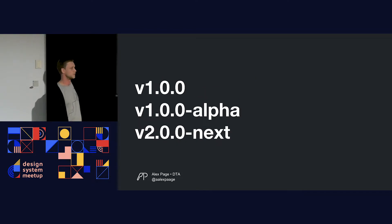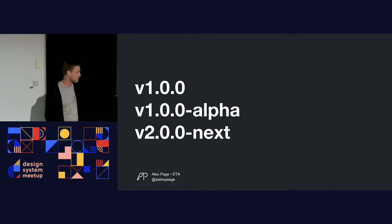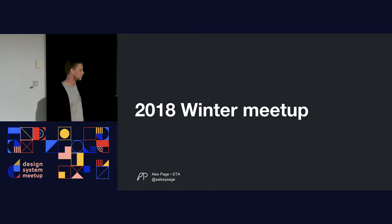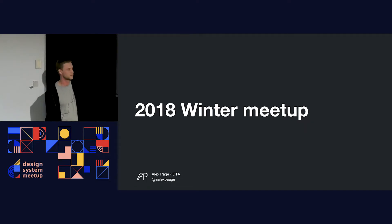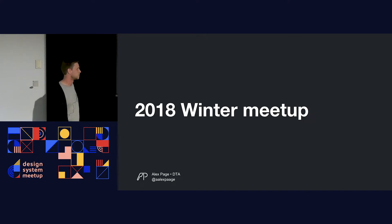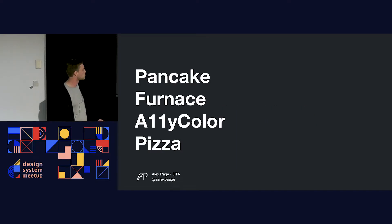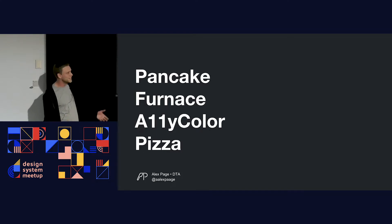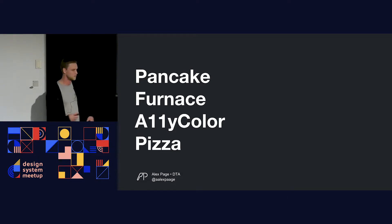We also do releases. When we release new components, we give them versions. We may use semantic versioning, add a tag, or deploy the next version of a component. Design systems also have events like community meetups — we recently hosted our 2018 winter meetup for the Australian Government Design System. And finally, the tools that go into them: we've built tools called Pancake, Furnace, Alley Color, and Pizza — all really random and fun names.